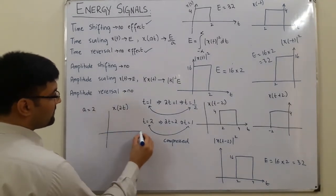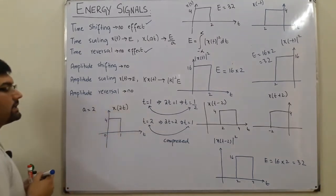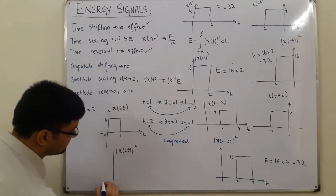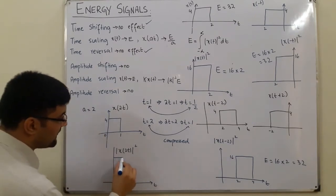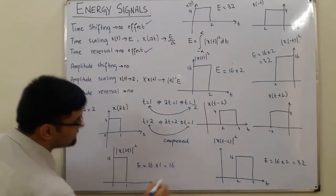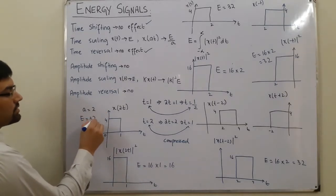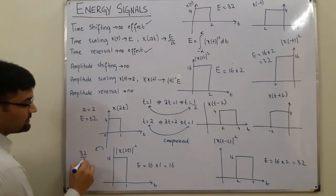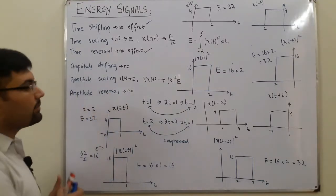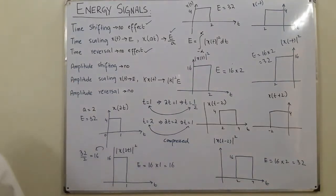Drawing the graph for x(2t): the amplitude is still 4, but now it runs from 0 to 1. Taking |x(2t)|², we get 16 from 0 to 1. The energy is 16 × 1 = 16 joules. The value of a = 2, and the original energy was 32, so the new energy is E/a = 32/2 = 16. We have seen the effect of time scaling.